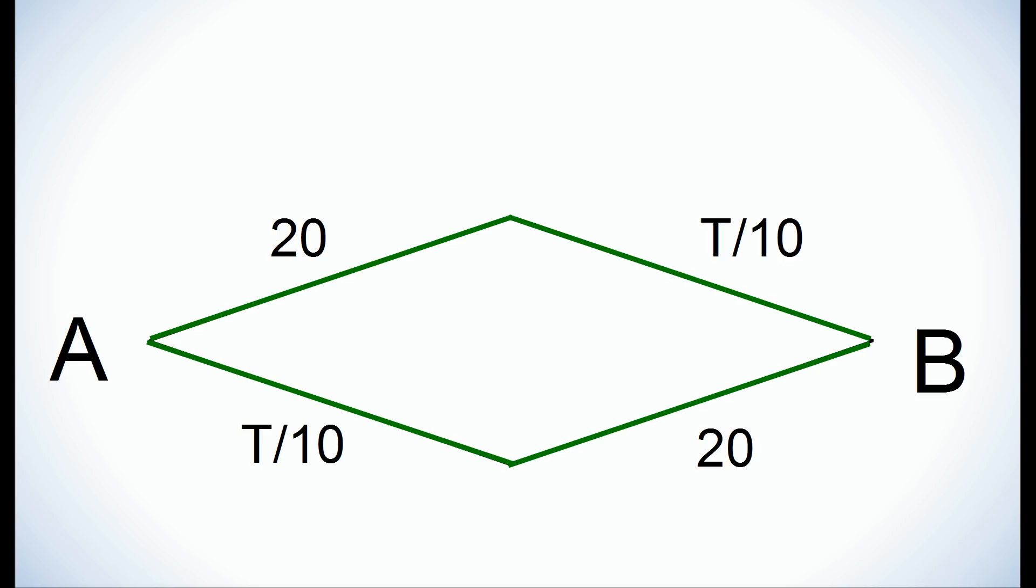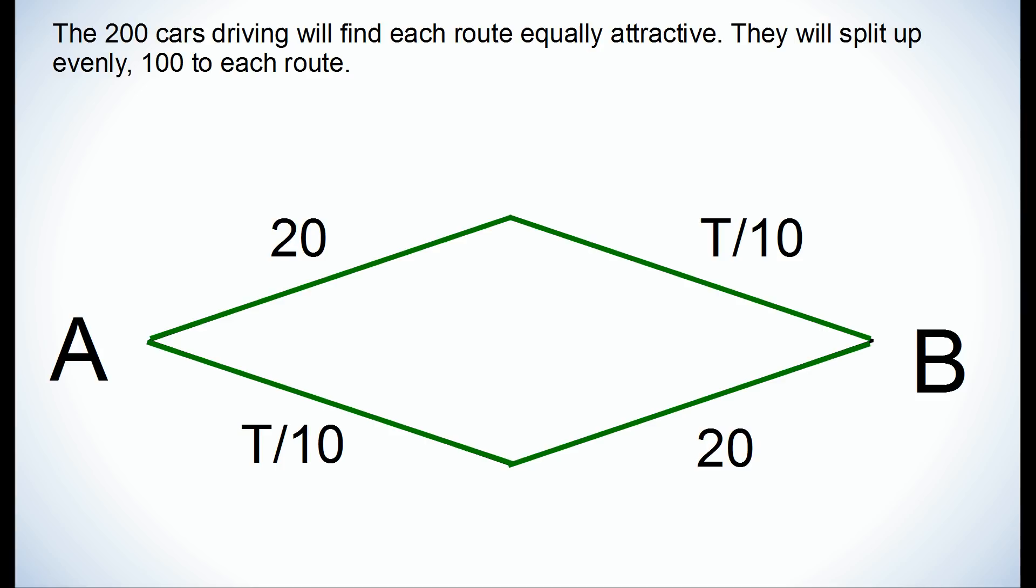This means there will be 100 drivers to each route. And we can substitute that for the level of traffic to find out that the roads with traffic end up taking 10 minutes apiece. Putting this all together, that means the total travel time from A to B is 30 minutes.